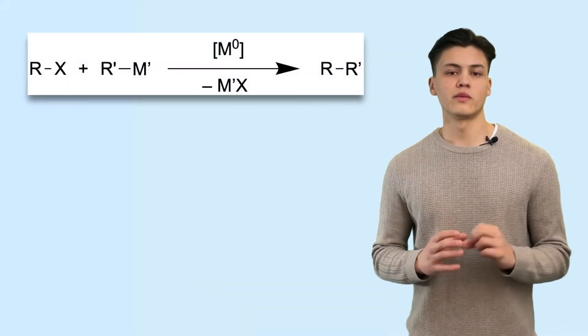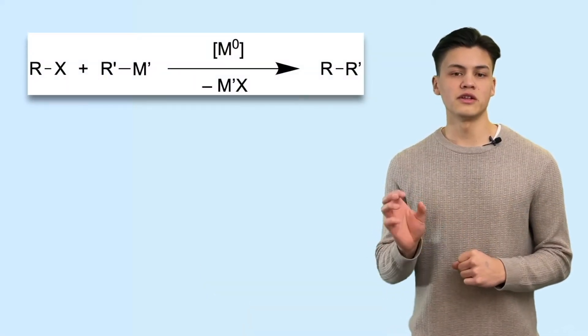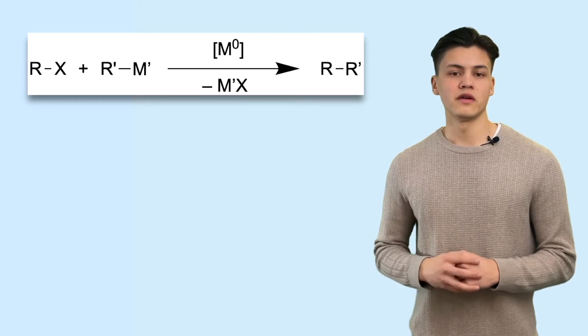Today we're going to talk about cross-coupling reactions and a few principles you have to know in order to understand them. Cross-coupling reactions are a powerful tool in modern synthesis because they allow the formation of C-C single bonds between two different kinds of molecules. We're going to look at the basic scheme and each component individually.